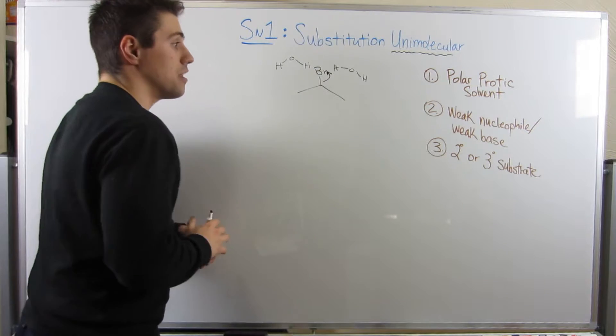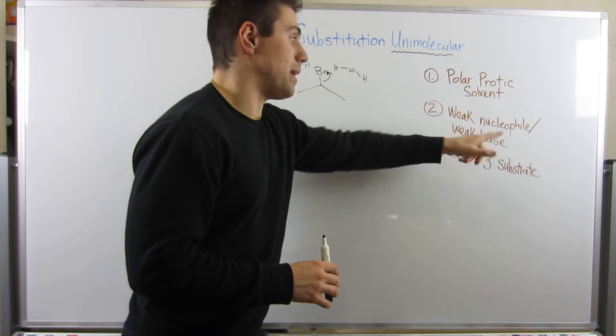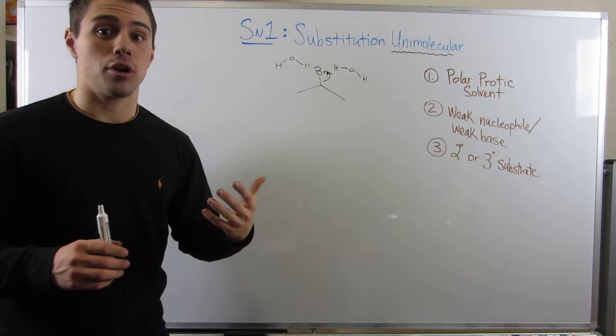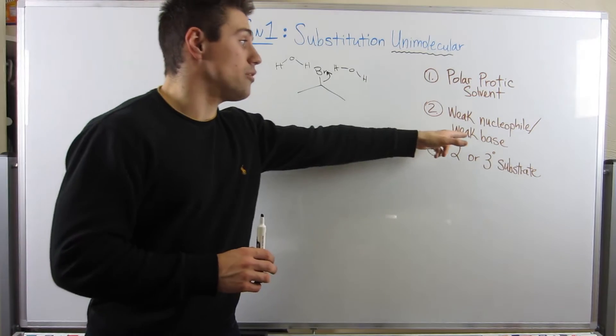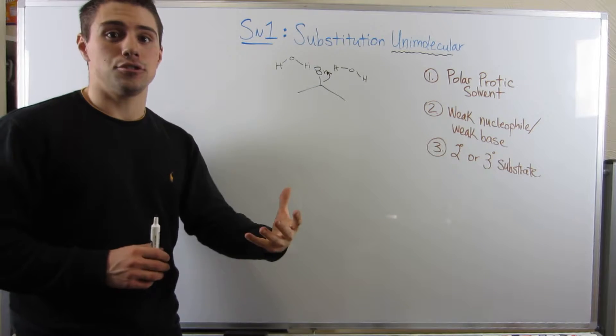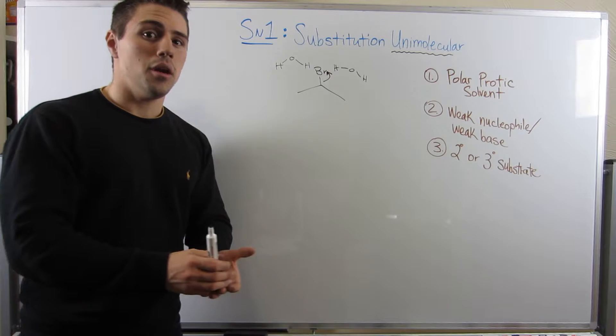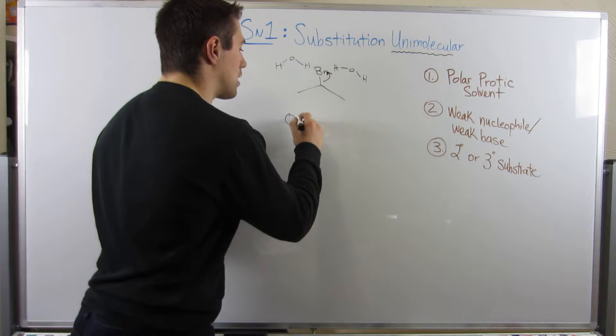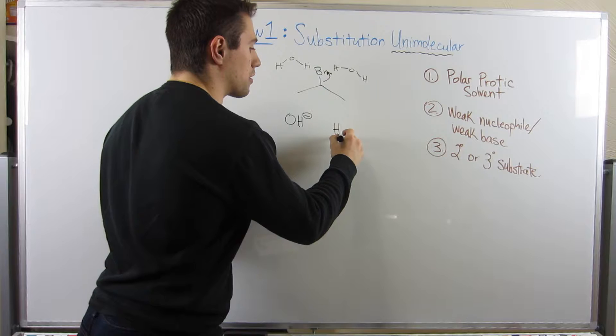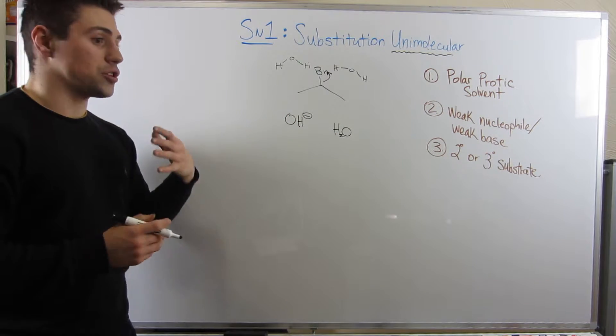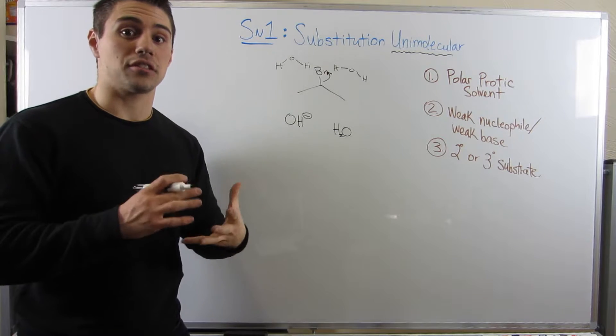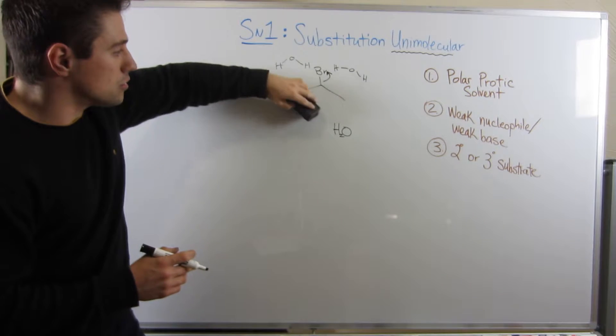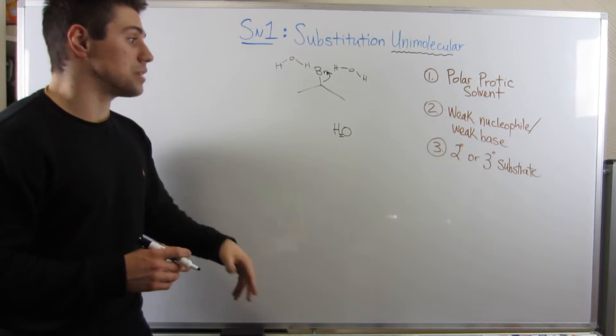So the next thing we look for is a weak nucleophile and a weak base. It kind of has to be both, because if we have a strong nucleophile, we might try to actually do SN2. On the same token, if we have a weak base, we could do elimination. We need something that wants to do substitution, but is kind of a little weak. It's not as reactive as, say, maybe a hydroxide. Instead, remember, we just used water.